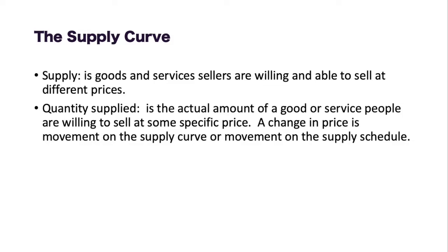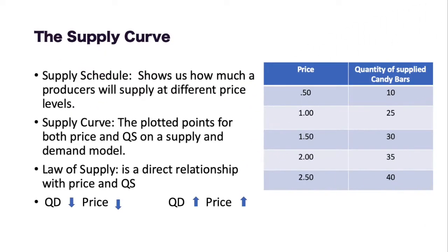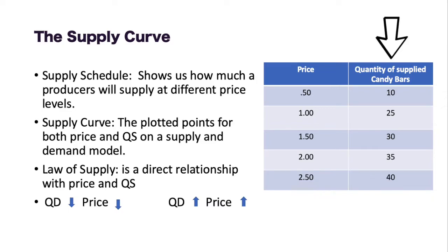A change in price on the supply curve is merely just movement up or down the supply curve, or movement up or down on the supply schedule. Here on the right we have a supply schedule with a column for price and a column for candy bars supplied. At different price levels: at $0.50 producers are willing and able to sell a certain quantity, at $1.00 they are willing and able to sell $0.25 worth, and at $2.50 they are willing and able to sell $0.40 worth. From the supply schedule you plot the points on your graph to produce your supply curve.